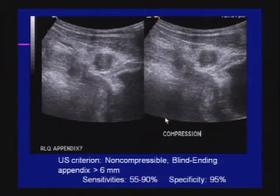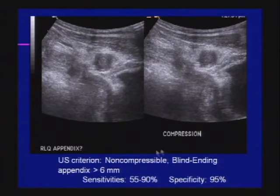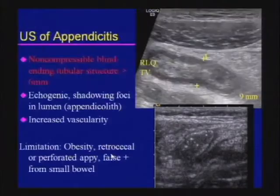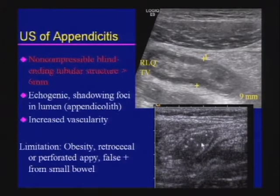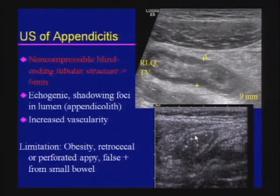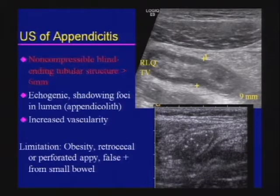For ultrasound, look for a non-compressible, blind-ending appendix greater than six millimeters. The specificity is very good, but sensitivities are widely variable, so a negative ultrasound does not exclude appendicitis. Measure the appendix from outer wall to outer wall. You may see echogenic foci representing appendicoliths and increased vascularity around the appendix. Be aware that in obese patients or with a retrocecal appendix where gas can shadow the area, you will likely get false negatives.